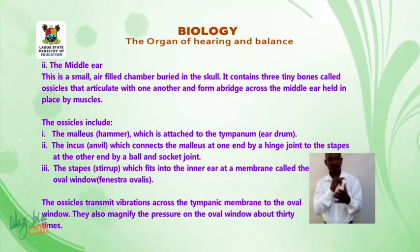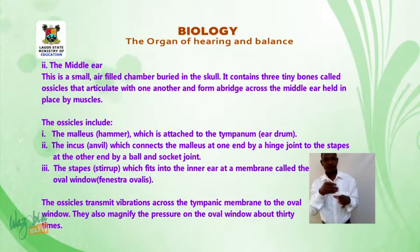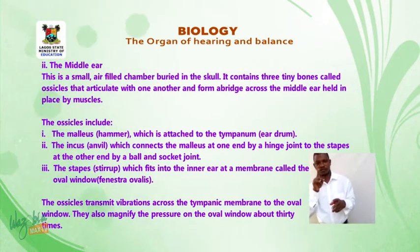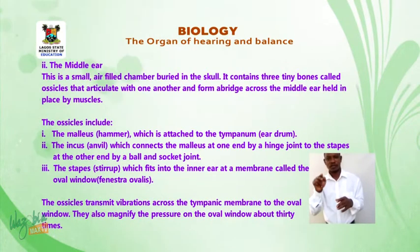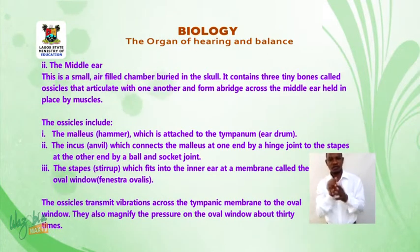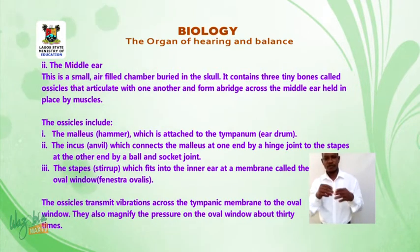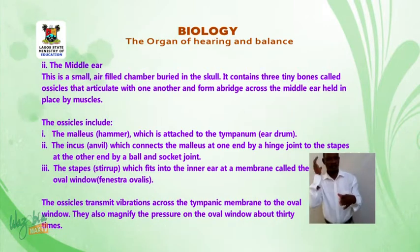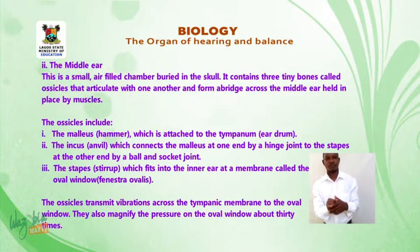The middle ear is a small air-filled chamber buried in the skull. It contains three tiny bones called ossicles that articulate with one another and form a bridge across the middle ear, held in place by muscles.